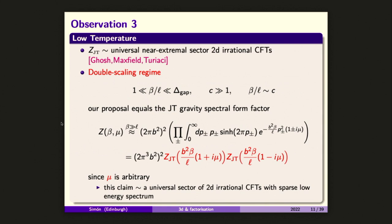What about the low temperature behavior of our proposal? There is this very nice work asking whether we can identify the Schwarzian action as a universal sector in a 2D irrational CFT. What these authors manage to show is that the partition function of JT appears universally in 2D irrational CFTs.